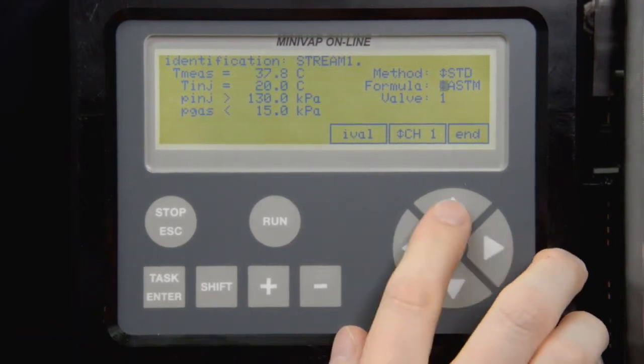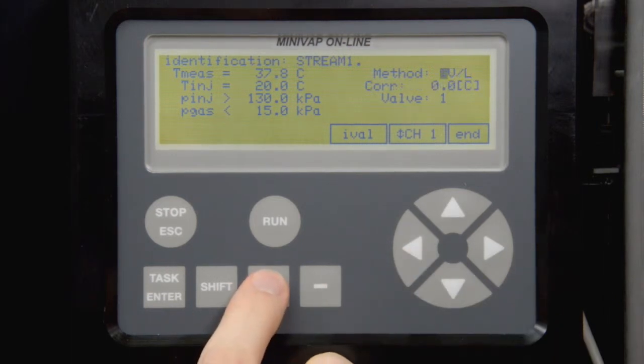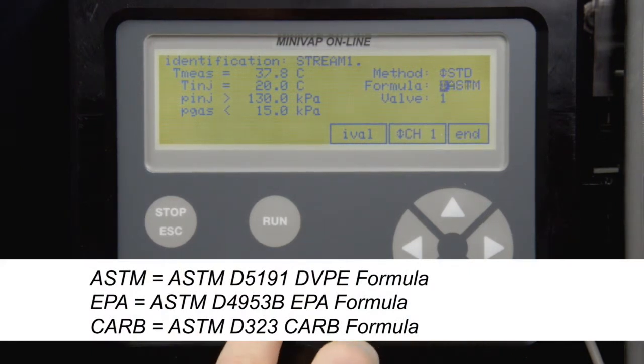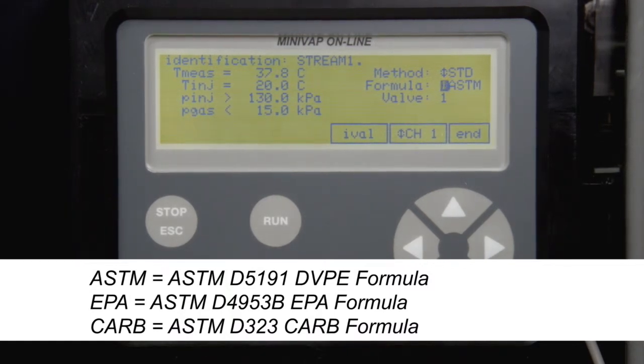Select a method for gasoline, crude oil or LPG. Then choose the standard and apply the correct formula. For standard gasoline measurements, ASTM is the approved DVPE formula for D5191 measurements. EPA is the EPA-approved correlation to ASTM D4953B. CARB is the D323 gasoline correlation formula used by the California Air Resource Board.